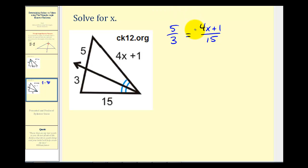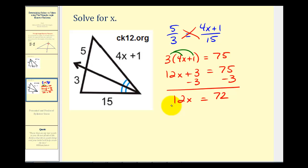So now we can cross multiply. 3 times 4X plus 1 must equal 5 times 15, that's 75. Now we'll distribute and solve for X. So we'll have 12X plus 3 equals 75, subtract 3 on both sides. 12X equals 72, divide both sides by 12.